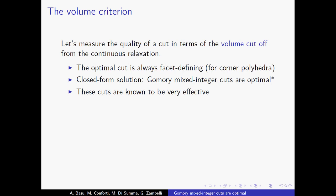So maybe this gives a justification of why these cuts are so good. The asterisk is the following: it is not true that if you give me any instance, then Gomory mixed integer cuts cut off the largest volume. This is not true for any instance — this is true on average. Along the same lines, it is not true that for every instance Gomory cuts perform well; this is true on average. We can prove this in the context of the Gomory-Johnson relaxation.